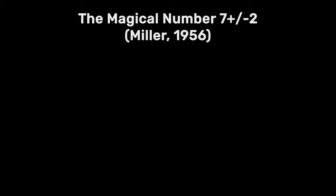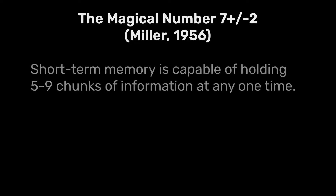We have the quite popular 1956 George Miller paper about the magic number seven plus or minus two, indicating that you can have a range between five and nine pieces of information at once in your short-term memory.